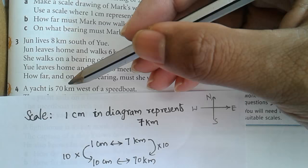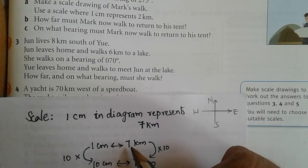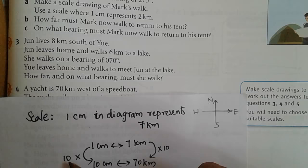So here we have 70 kilometers, which means 7 kilometers taken 10 times. So for every 7 kilometers in the diagram it is 1 centimeter, so take 1 centimeter 10 times, which is 10 centimeters.